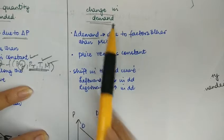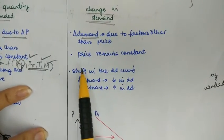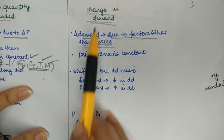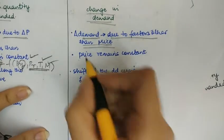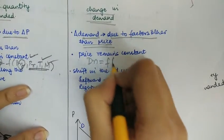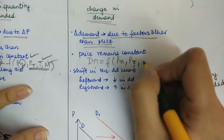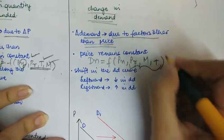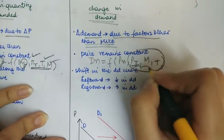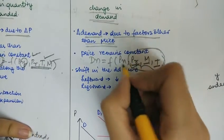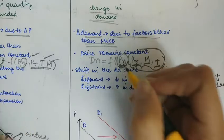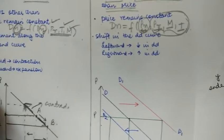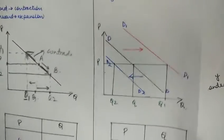Change in demand occurs when the demand of a good changes because of factors other than the price of that commodity. Here the price of commodity N remains constant, but other factors such as price of related goods, income, and taste and preferences of the consumer change. This leads to a shift in the demand curve, not a movement along it.